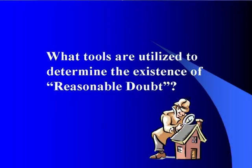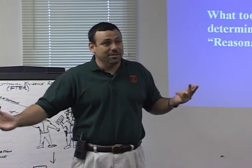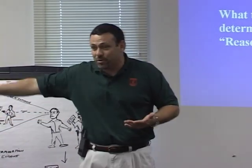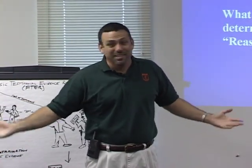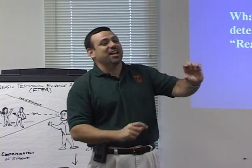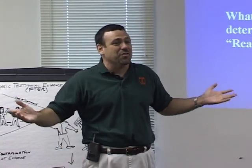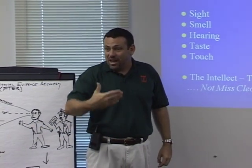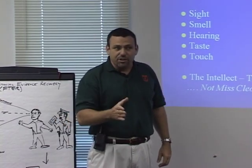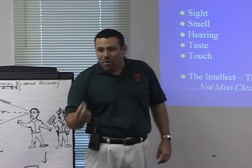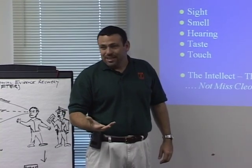What tools are utilized to determine the existence of reasonable doubt? Just your intellect — there's no computer program, no measuring device, no field test kit. We're going to use the five senses to help us evaluate information, ideas, concepts, and evidence — both physical and abstract. The majority of the evidence we deal with as criminal defense investigators is conceptual because it's testimonial. Testimonial evidence is not tangible at all — it's extremely fluid, very conceptual, very abstract. We as investigators have to understand reasonable doubt, but also recognize it's not our job to come to a conclusion if it's there or not.